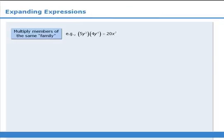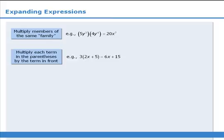In this lesson we learned that we can find the product of monomials by multiplying members of the same family. And we learned that we can find the product of a monomial and a polynomial by multiplying each term inside the parentheses by the term in front of the parentheses.